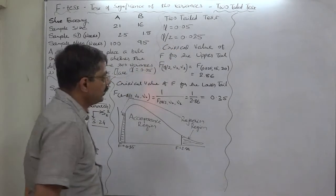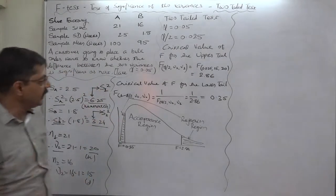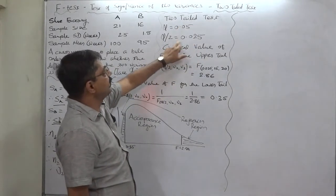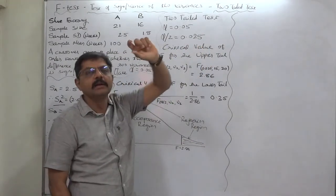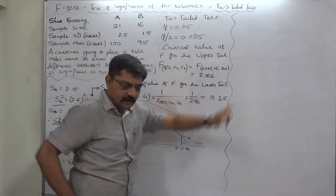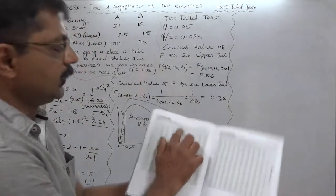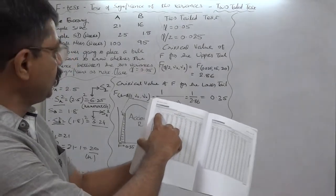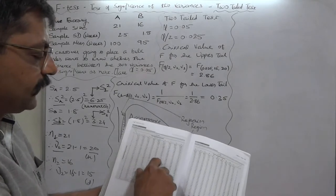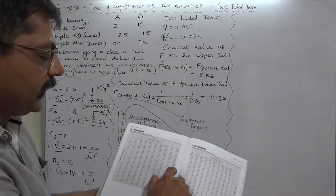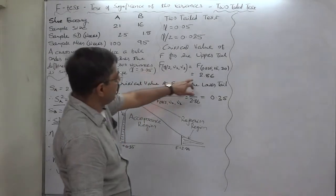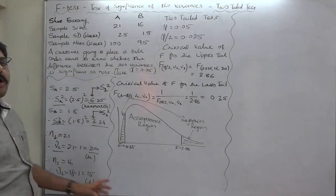For critical values, find the F-distribution table with the alpha by 2 value of 0.025 — that should be given in the title of the table. We are first going to find the critical value of F for the upper tail. The table is with me: alpha is 0.025, degrees of freedom of the denominator is 15, so in the first column find 15. Degrees of freedom of the numerator is 20, so against 15 find the value in the column of 20. That comes to 2.86. So the critical value for the upper tail is 2.86.